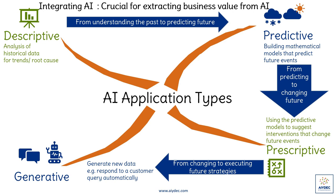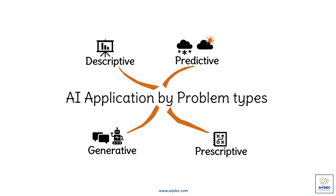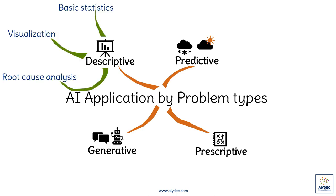Now, let's further expand the AI applications by problem types. We are now getting more into the world of data scientists. As a business user, it's very important to understand these problem types as this will help you better collaborate with your data scientists. It is also a basis to understand the assumptions, strengths and weaknesses of various AI techniques. Starting again with descriptive analysis, you could do some useful basic statistics like correlations or visualization of summarized data through graphs, charts, etc. You could also do some root cause analysis. Descriptive analysis is unrestricted by its very nature, and we will dedicate one of our future sessions to understand when it is useful and when it is just too noisy.